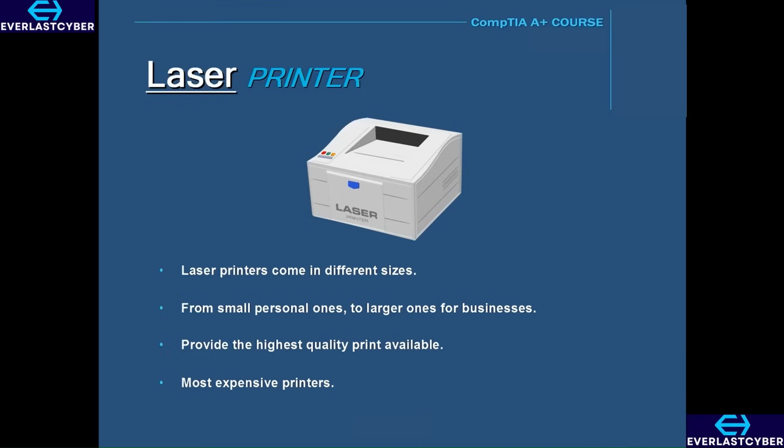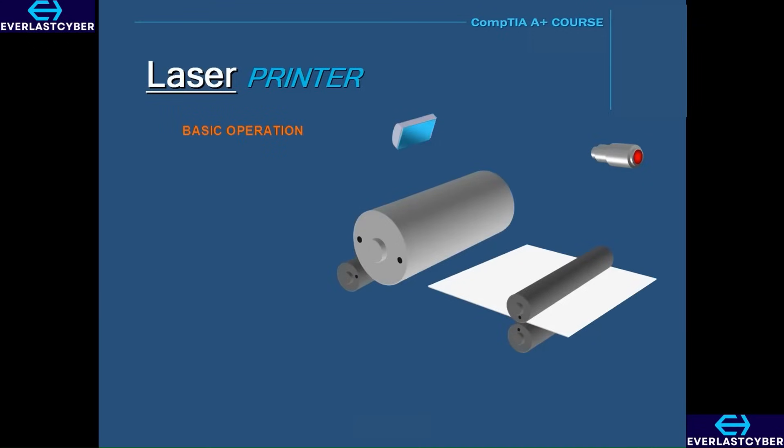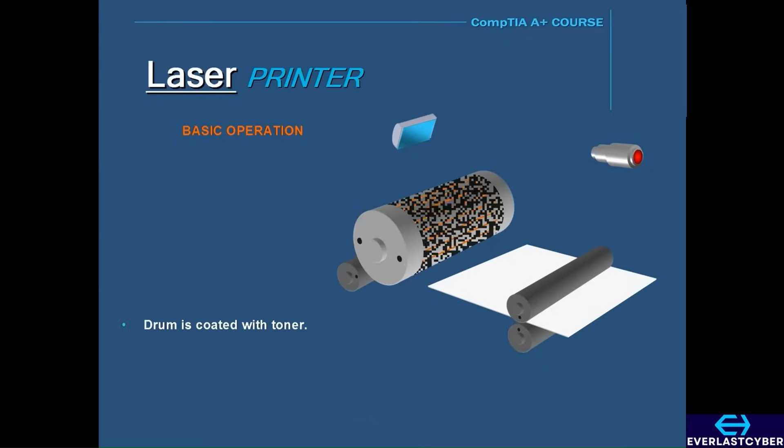A laser printer works by placing an electric charge on a rotating drum. Then a laser discharges a lower electrical charge on the drum. So basically, the laser draws the image that is going to be printed on the drum itself. Then the drum is coated with a fine black powder, known as toner. And as the drum is being coated, the toner only clings to the areas where the laser has drawn.